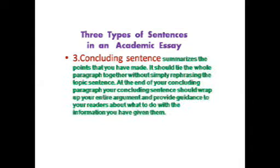The third type is the concluding sentence. The concluding sentence in the paragraph summarizes the points you have made — that sentence will give the summary of that particular paragraph. It should tie the whole paragraph together without simply rephrasing the topic sentence. At the end of your concluding paragraph, the concluding sentence should wrap up your entire argument and provide guidance to your readers about what to do with the information you have given them — some guidelines for further action.